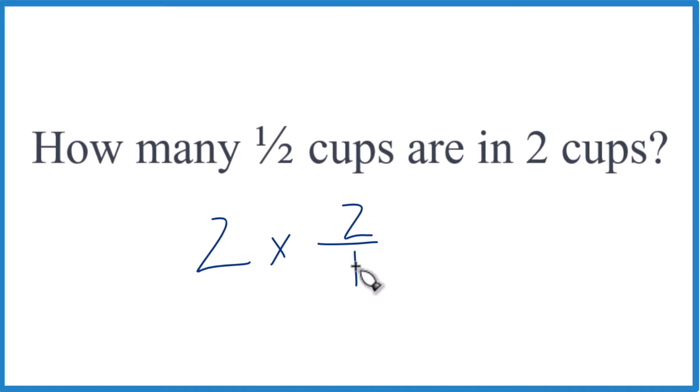So two over one, two divided by one is just two. So two times two, that equals four. That's what we found earlier.